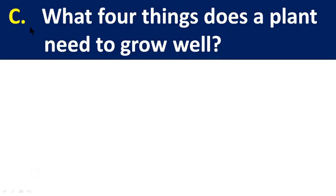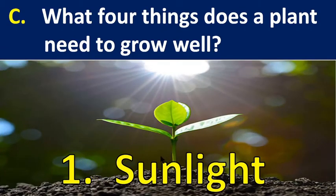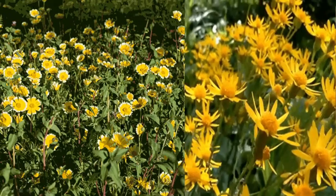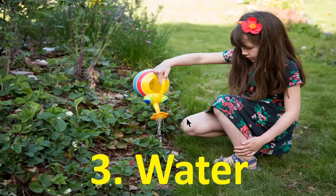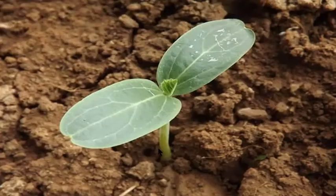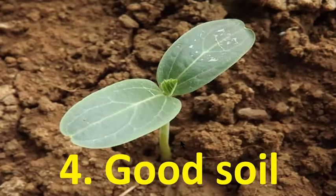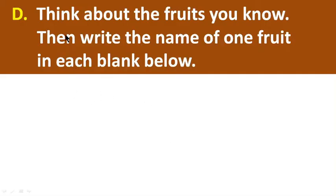Question number C: What four things does a plant need to grow well? Number one: sunlight. Number two: air. Number three: water. Number four: good soil. Good soil is very important for a plant.